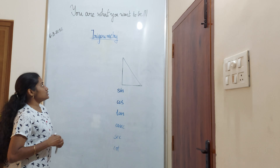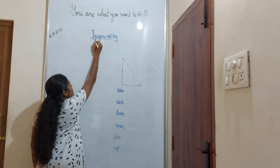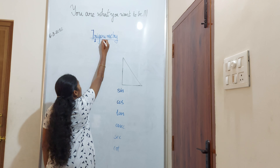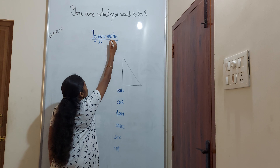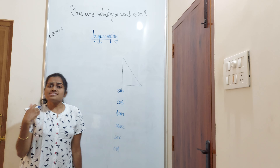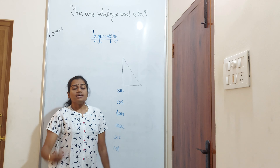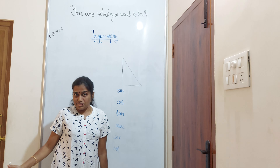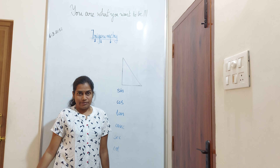What is trigonometry? Here, 'tri' means three, 'gon' means sides, and 'metry' means measurement. It is actually a Greek derivation. So trigonometry means three-side measurement.